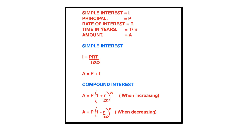Before we move forward we should know that simple interest is written as I, principal as P, rate of interest as R, time in years as t when we are finding simple interest, and when we use the compound interest formula we write time in years as N. Amount is written as A.